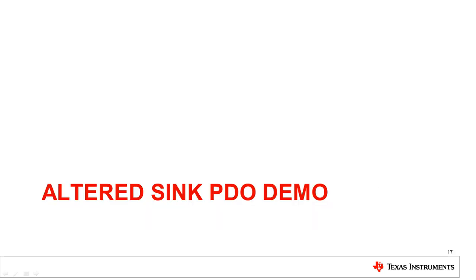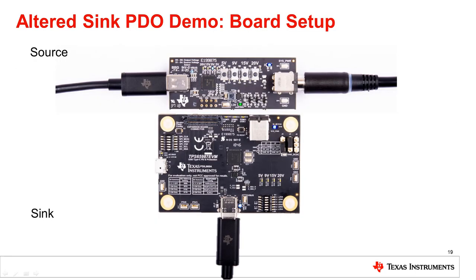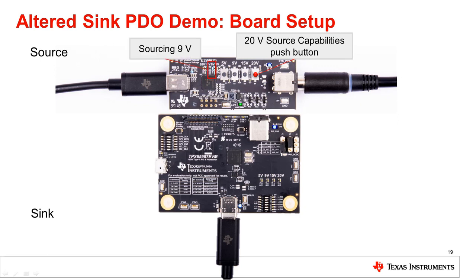For our last demo, we will use the GUI tool to change the EVM sink PDOs. Here, the GUI is used to change the variable 5 to 20 volt 900 milliamp sink PDO to a fixed 9 volt 1.8 amp sink PDO. Now the source board is used so the EVM can operate as a sink. Though the source board offers up to 20 volts of sourcing, the EVM can now only sink up to 9 volts, so the 9 volt LED comes on on the source board.